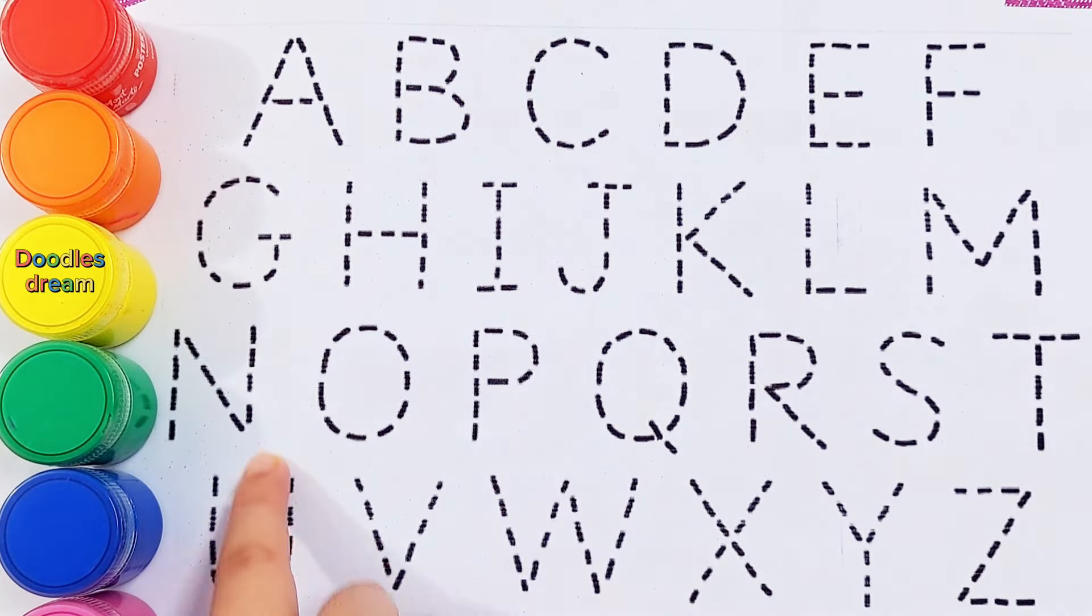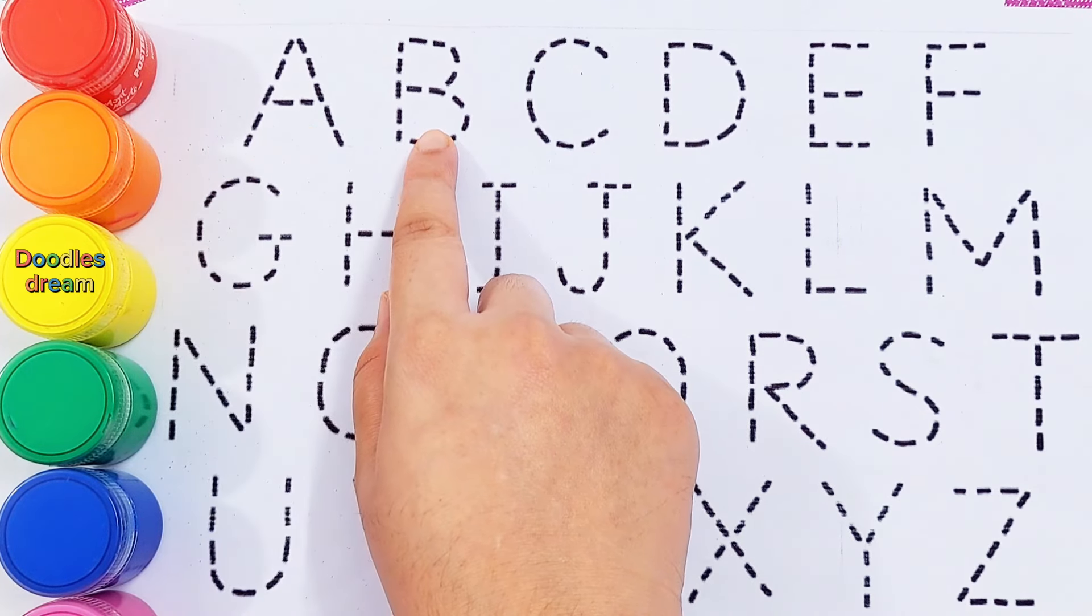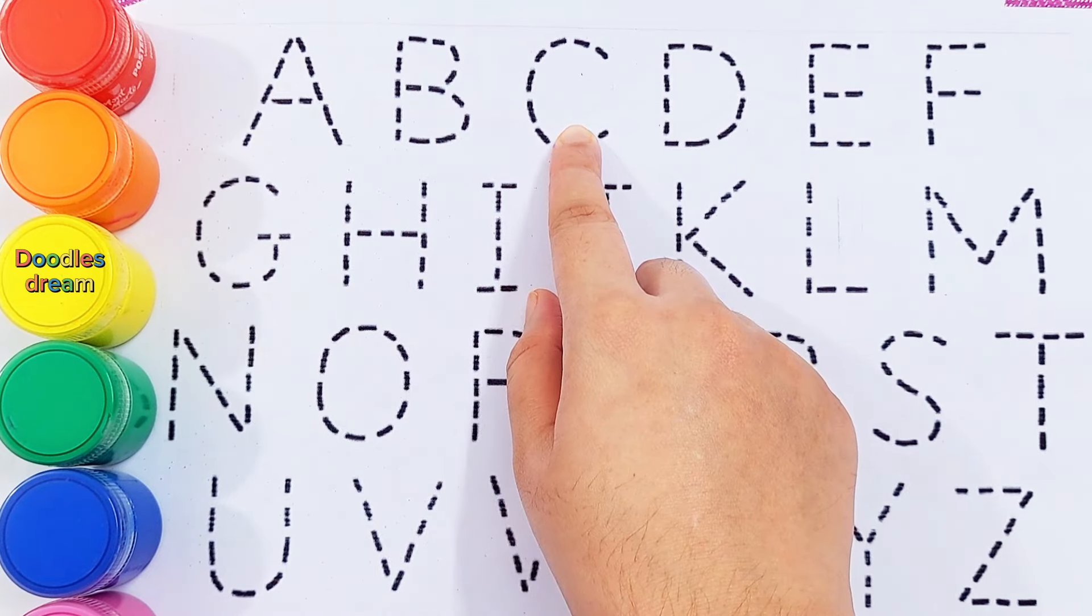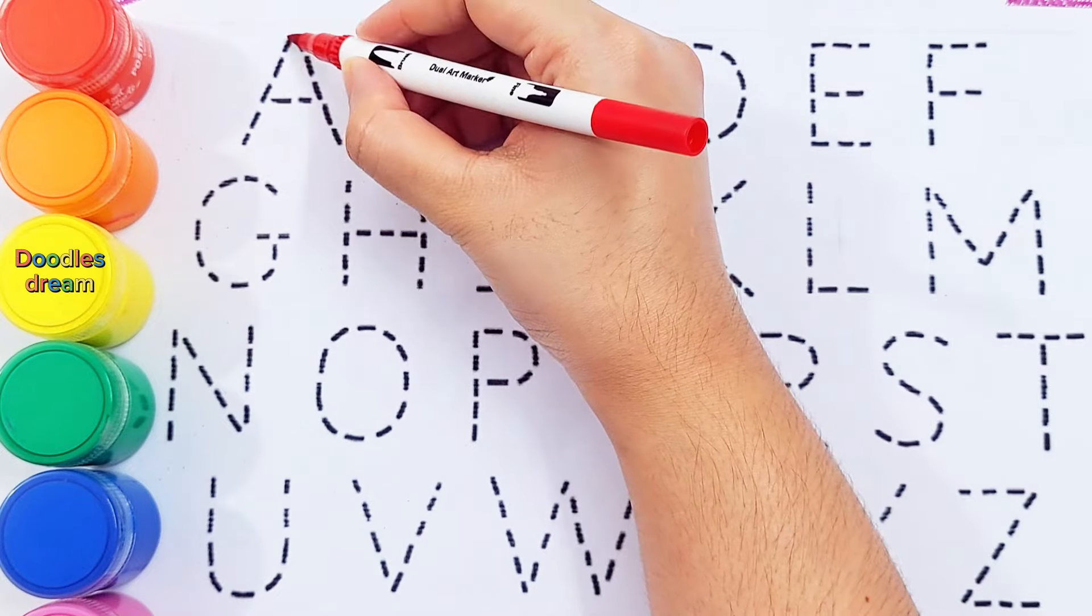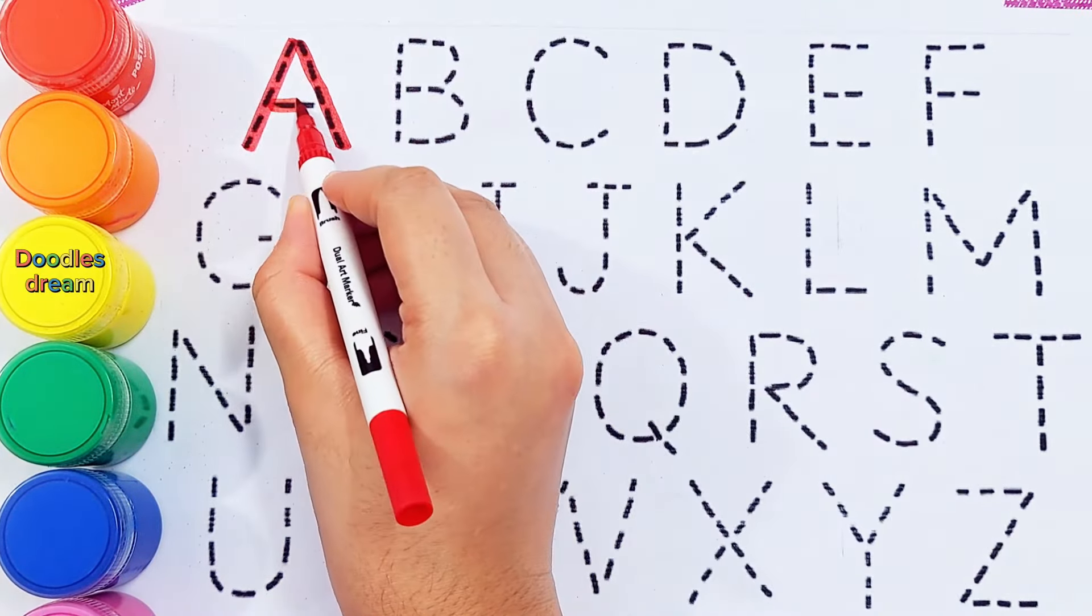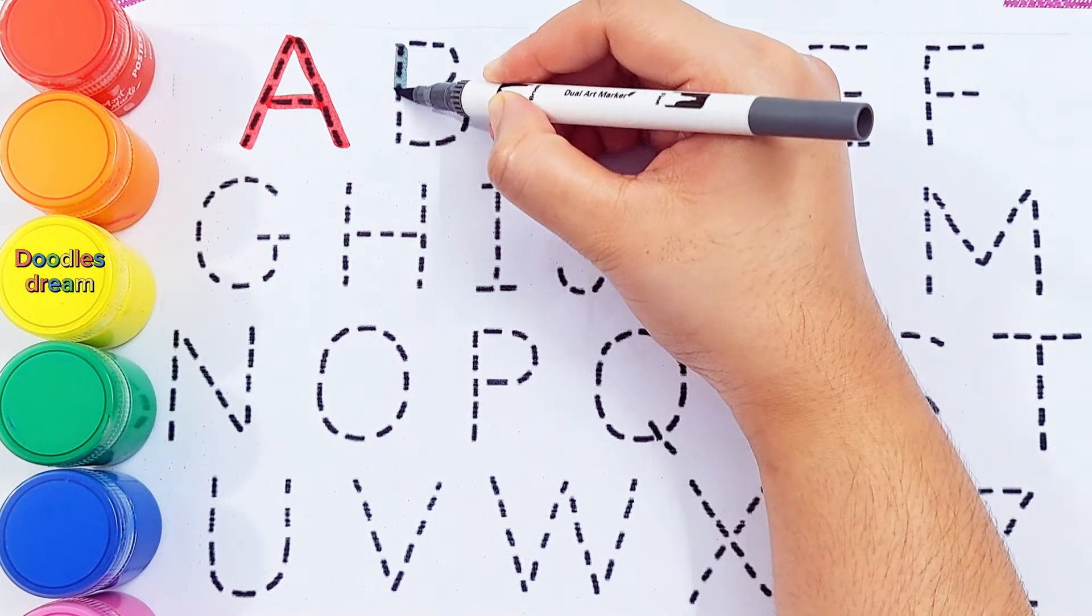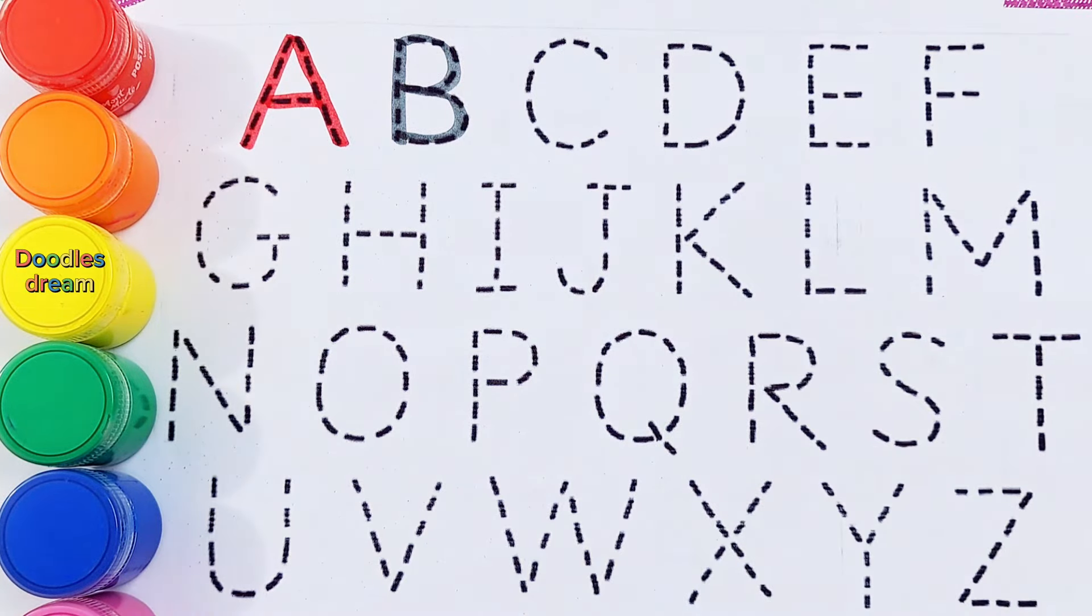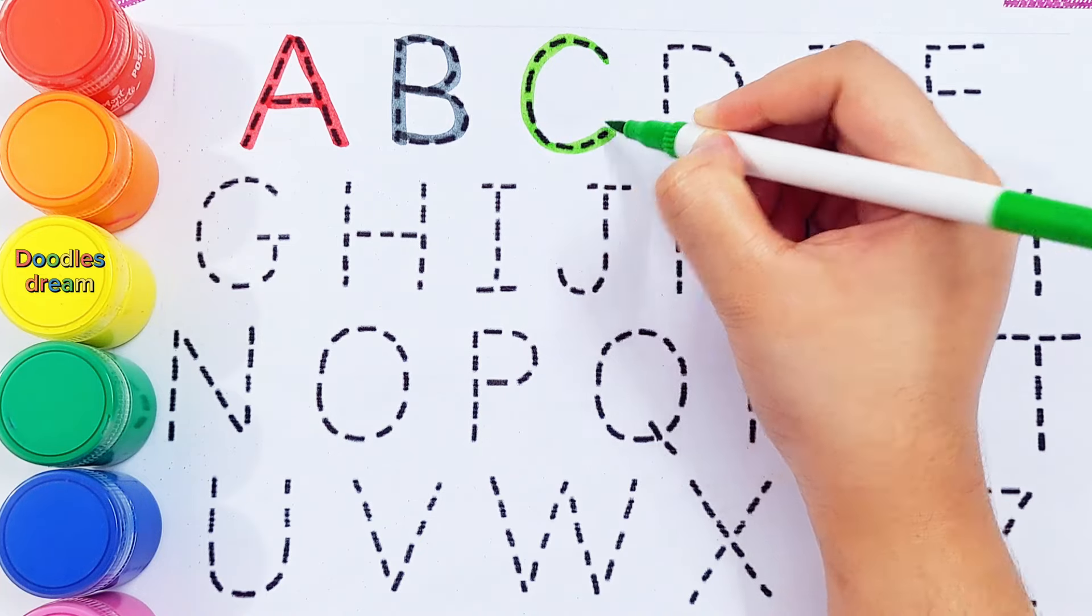Let's try to learn some alphabets. A, A for avocado. B, B for broccoli. C, C for carrot. A, A for avocado. B, B for broccoli. C, C for carrot.